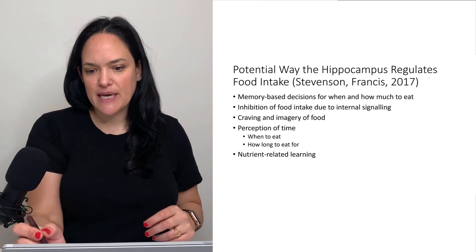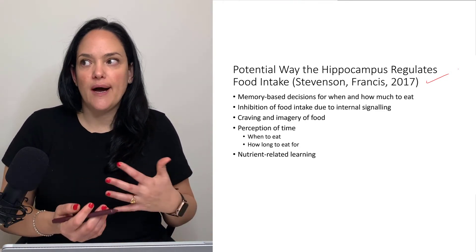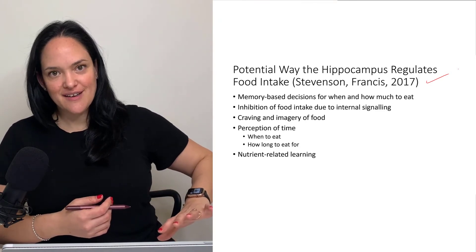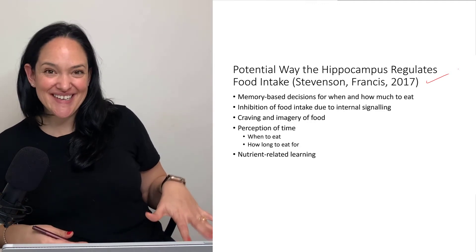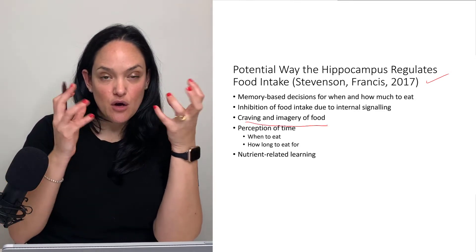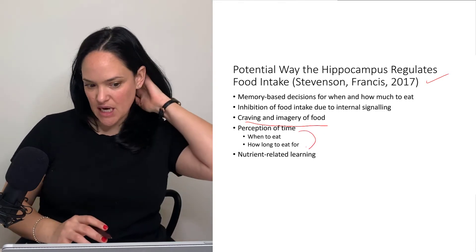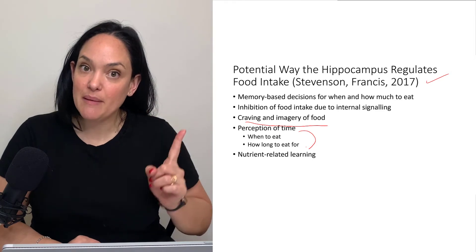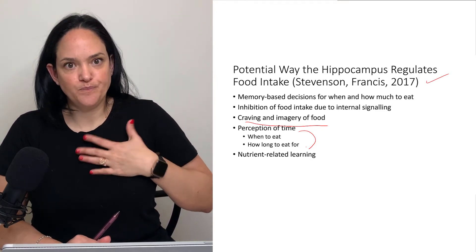The hippocampus supports memory-based decisions on when and how much to eat. It could also promote triggers — like seeing a restaurant and remembering enjoying eating there, or seeing McDonald's golden arches and remembering positive experiences and wanting to eat there. Craving and imagery of food can show more activation in the hippocampus. I've also talked about the perception of time and nutrient-related learning — what kinds of nutrients invoked which responses in our body — and how we remember that has implications for the next time we eat.